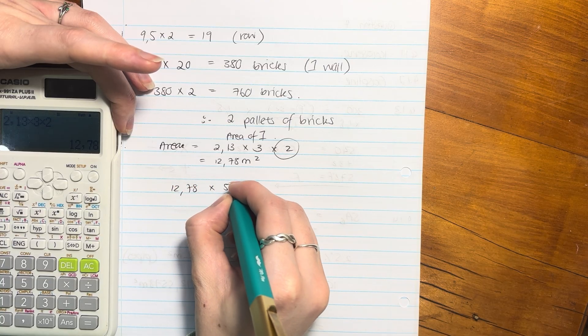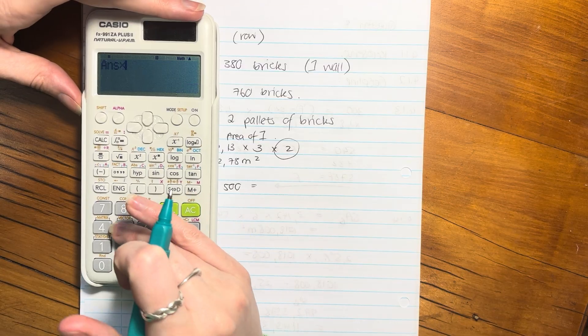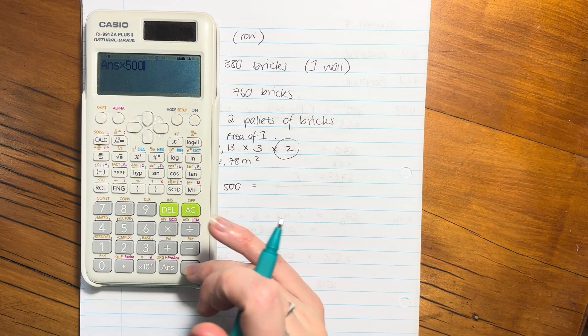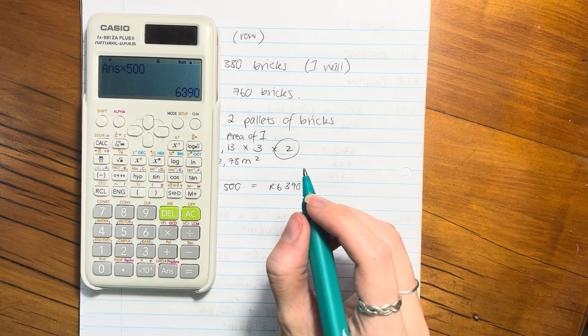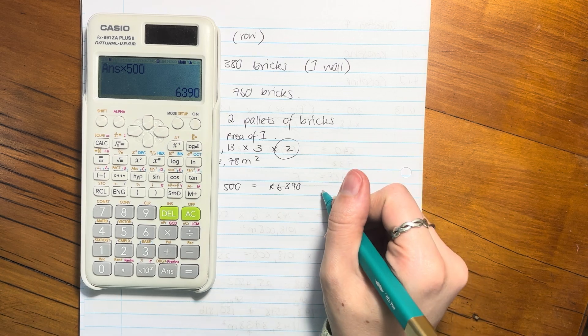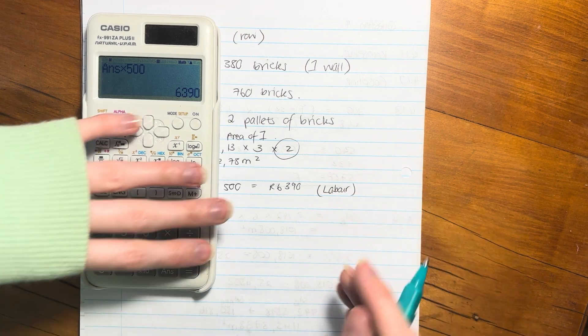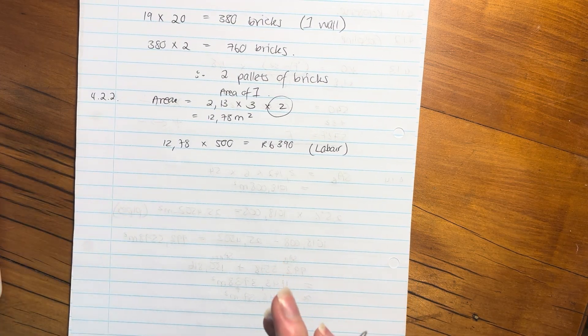Given that that is our square meterage, we need to take that and times it by 500 because that's going to give us our labor costs. It's 500 rand per meter squared, so we put that in there and that's going to cost us 6,390. So that's our labor.